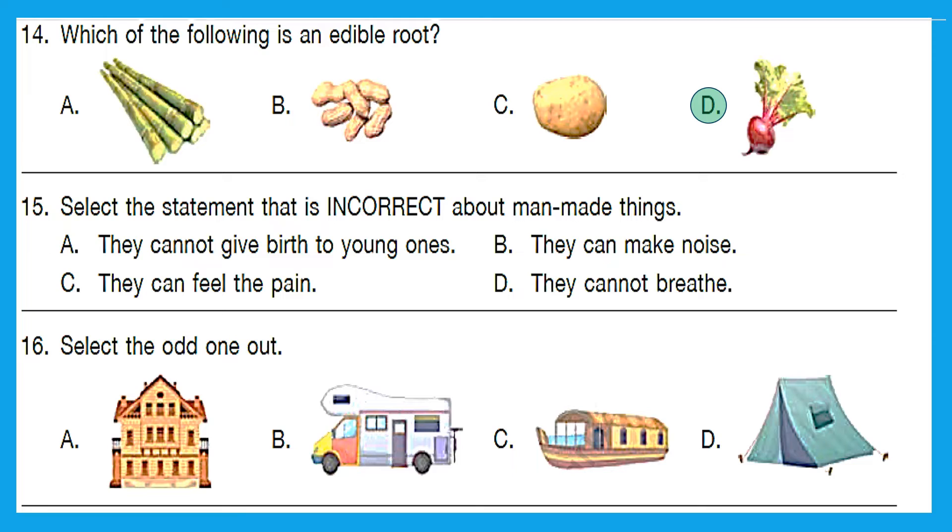Question 15. Select the statement that is incorrect about man-made things. A, they cannot give birth to young ones. Yes, that is correct because man-made things cannot give birth to young ones. They can make noise. Yes, they can make noise. They can feel the pain. They cannot feel the pain. Man-made things cannot feel the pain. So option C is incorrect.